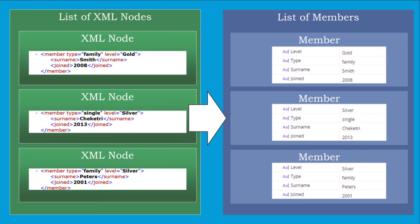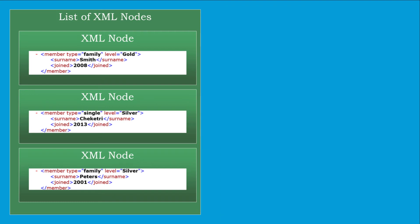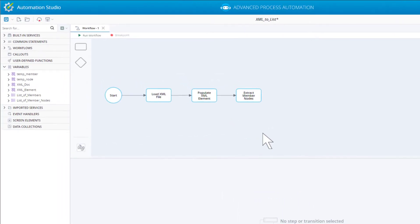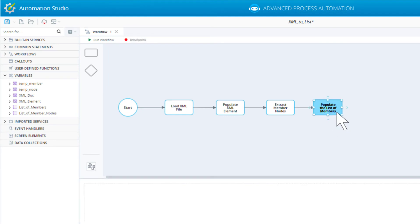At this point we have a list of XML nodes, and we want to use the data in this list to populate a list of members. Each node stores two attributes — type and level — and two nodes — surname and joined. The process for extracting data from attributes and from nodes is slightly different. Add a workflow step to populate the list of members. The process involves iterating through the list of nodes using a FOREACH statement from the COMMON STATEMENTS group. Select the list of member nodes to iterate through.